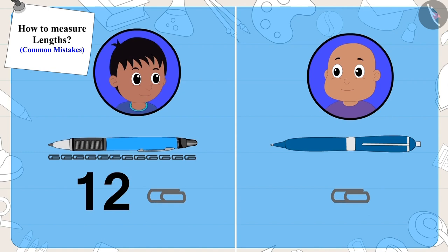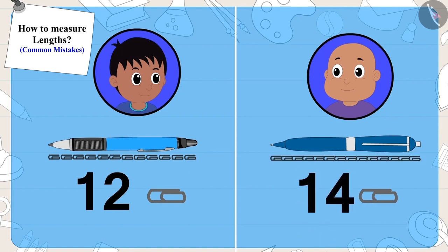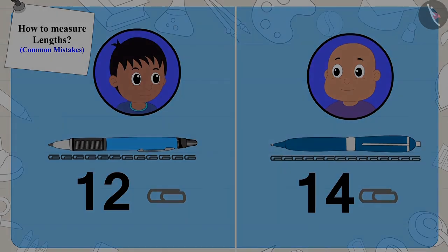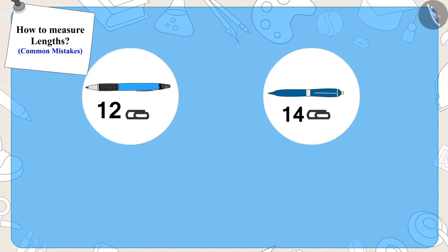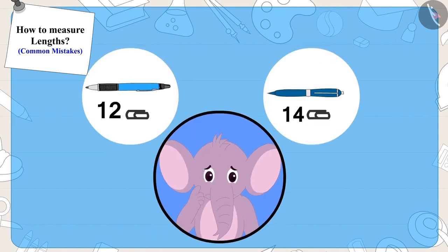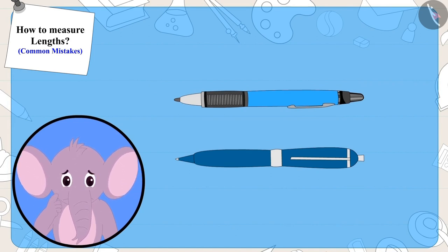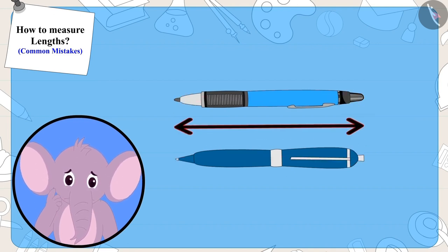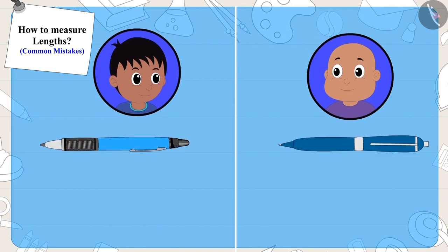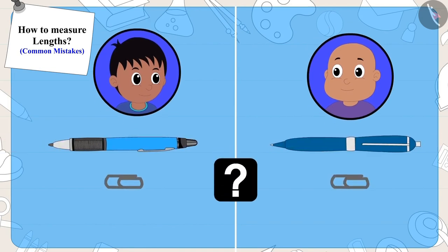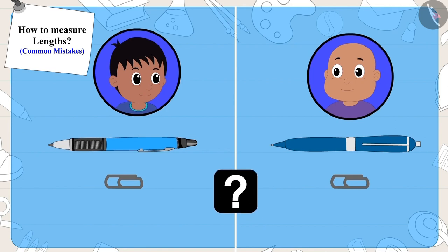Raju said his pen was 12 clips long and Bablu said his pen was 14 clips long. Appu again felt something was wrong. He placed both their pens alongside each other and saw that both pens were of the same length. Can you say this time who made the mistake and what was the mistake?